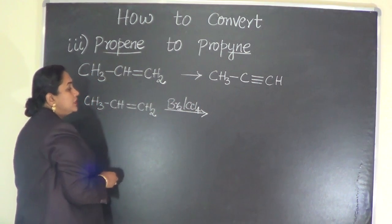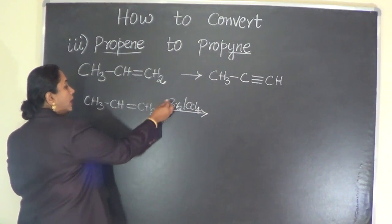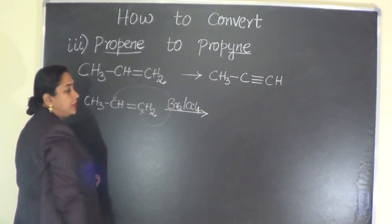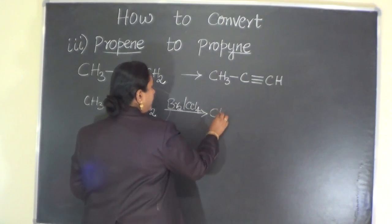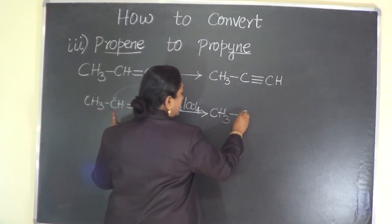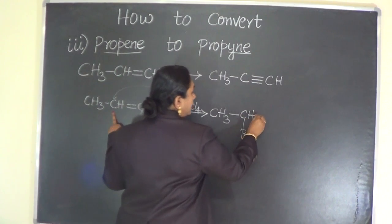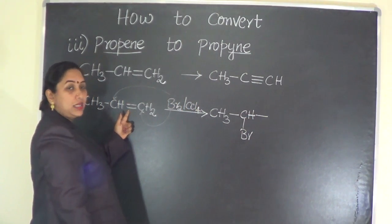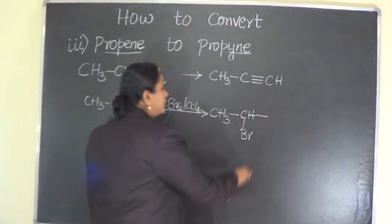Now what will happen? Addition reaction will take place at the double bond. One bromine will attach to this carbon, another bromine will attach to this carbon. CH3 single bond CH-Br, then instead of double bond it becomes a saturated hydrocarbon because it is undergoing addition reaction, then CH2-Br.